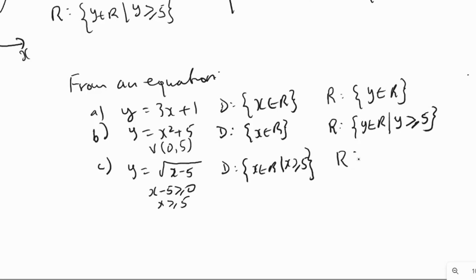For the range of y = √(x − 5): a square root always means the positive square root, so there are no negative outputs. When x = 5, y = 0. Therefore, the range is y belongs to R such that y is greater than or equal to 0.